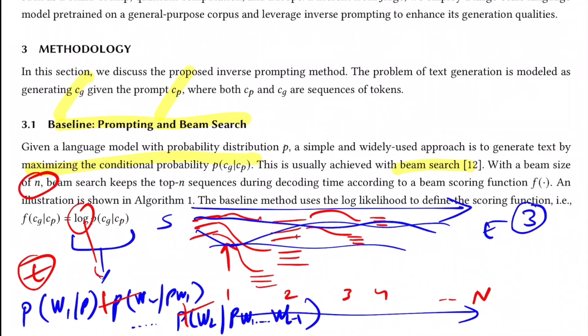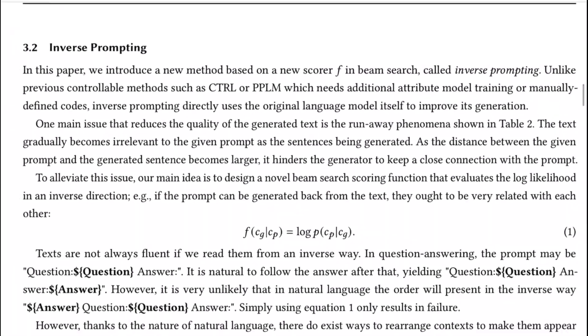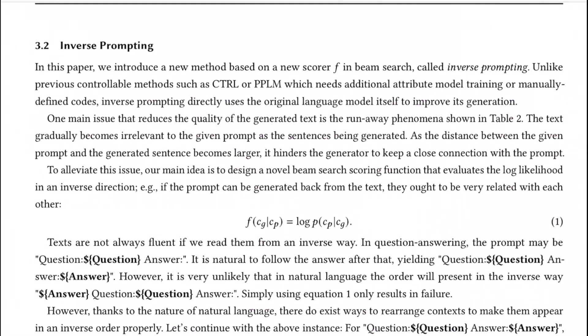Now talking about the method they propose, which is inverse prompting. As we had already discussed the motivation for this method, which was that with the previous methods, as the distance between the given prompt and the generated sentence becomes larger, it really hinders the generator to keep close connection with the prompt. As this distance keeps on increasing, it becomes really hard for the model to keep attending to really long dependencies. Authors define a novel beam search scoring function wherein you have a generated text and you're trying to predict the prompt and you try to maximize this.